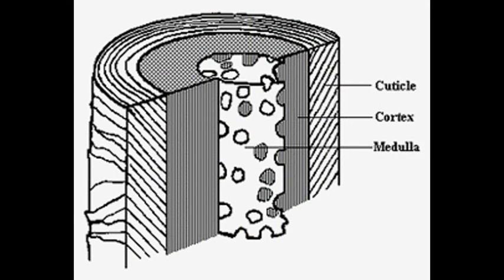The innermost layer, and sometimes absent, is the medulla. The middle layer, and also 90% of the hair strand, is called the cortex. The cortex is where water is stored, where the strength, texture, and color is found.